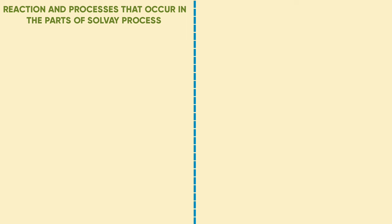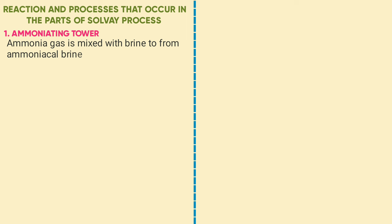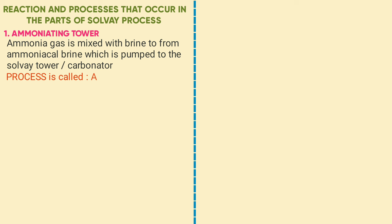The reactions and processes that occur in the Solvay process include the first part: the ammoniation tower. Ammonia is mixed with brine to form ammoniated brine, which is pumped into the carbonator. The process that occurs there is called ammoniation.